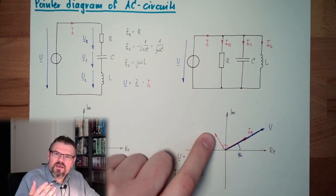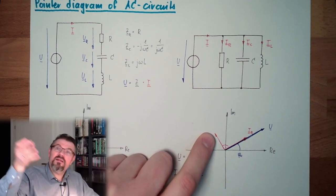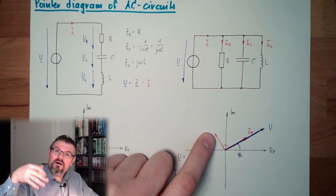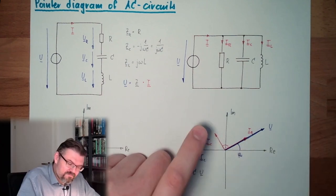Because on a capacitor, first the current has to rush in, then the voltage is building up. That's how it is.